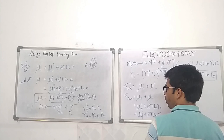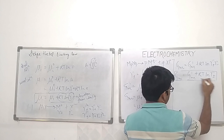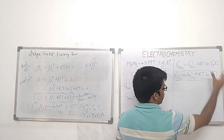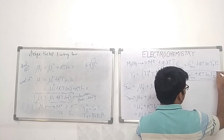The real situation differs from the ideal solution by the deviation term. We know how to connect the deviation to energy. Now let us find how we can quantify this γ.